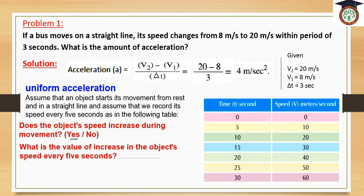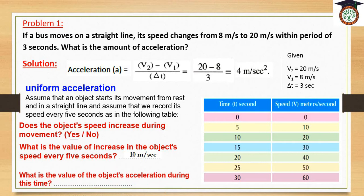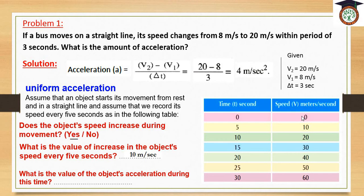What is the value of increase in the object's speed every 5 seconds? What is the value of the object's acceleration during this time? To find acceleration, we find delta V = V2 - V1 = 60 - 0, divided by the time of change which is 30 - 0. So 60 divided by 30 equals 2 meters per second squared.